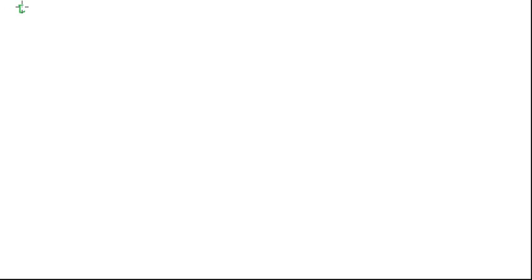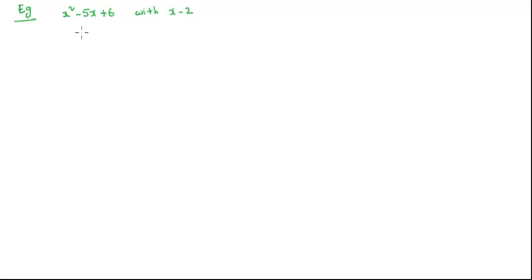Now consider the remainder. Divide x squared minus 5x plus 6 with x minus 2. Here, x squared minus 5x plus 6 is called the dividend, and x minus 2 is called the divisor.